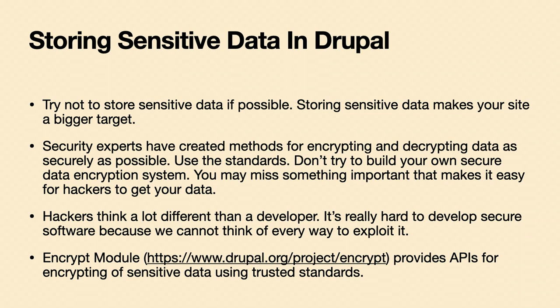These things also change over time. 10-20 years ago when Drupal started, an MD5 hash — which is about 32-bit instead of 512 — was considered plenty. Now we can run those hashes a million times in a few seconds, so it's no longer adequate. The more you can use standard libraries that do this, the better. There is also a module called the Encrypt Module that provides APIs for encrypting and decrypting data, so if you need to store sensitive data in your database, that might be a good starting point.